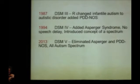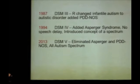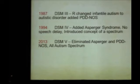In 1987, they put autistic disorder in there and then added PDD-NOS — pervasive developmental disorder, not otherwise specified.